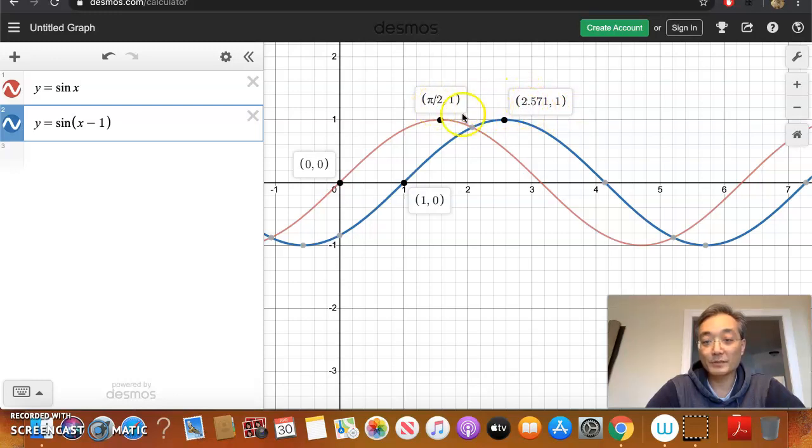It's not double, sorry. It's added 1, right? So it's π/2 plus 1 is 2.571. So by putting a minus 1, I effectively took the sine function and shifted it one unit to the right. And this is called a phase shift. A horizontal shift is called a phase shift when we're talking with sinusoidal functions.